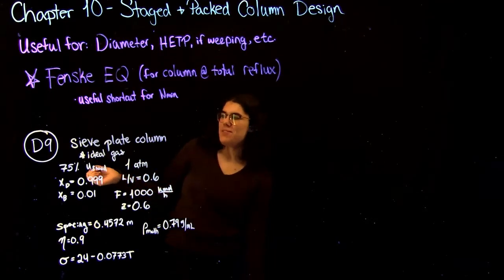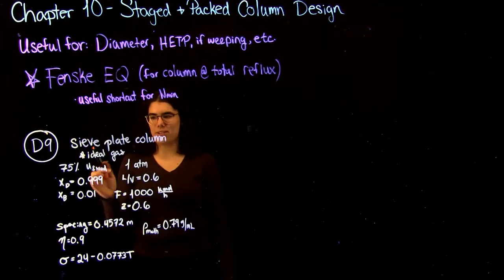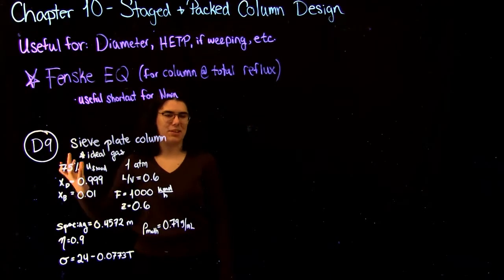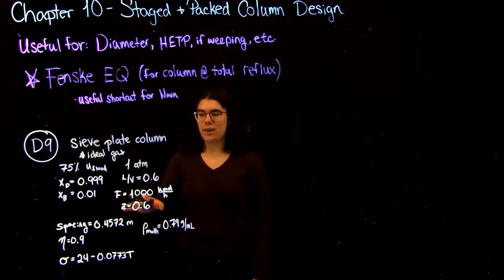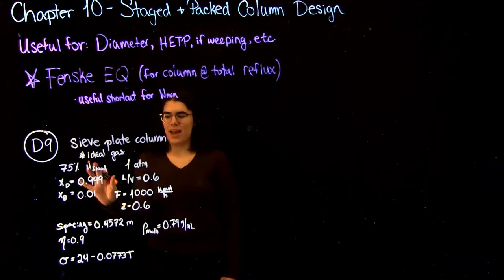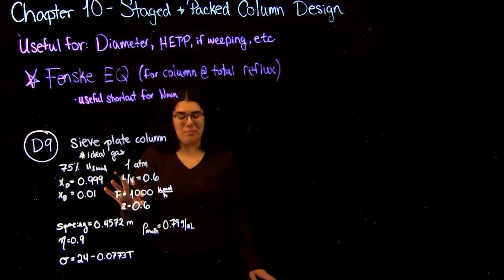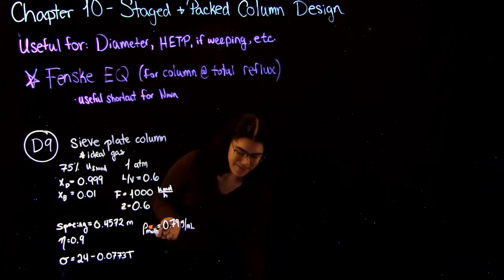Okay, so the question we're going to be doing is D9, and I've written down everything the question has given us because it is a little bit of a long paragraph. So when you're given a question like that, a really useful first step is to read it once and then read it a second time and get all your useful information out of it.